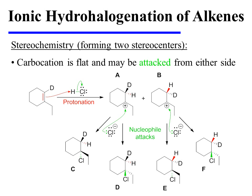In this instance, alkyl chlorides C and F are enantiomers of one another — notice how they have the opposite configuration at each and every stereocenter. Alkyl chlorides D and E are also enantiomers of one another, with opposite configuration at each and every stereocenter. Any other comparison of the alkyl chloride products will be diastereomeric in nature.